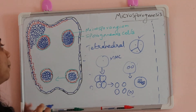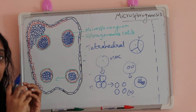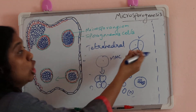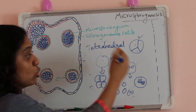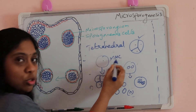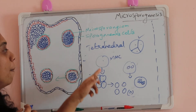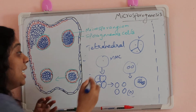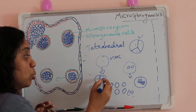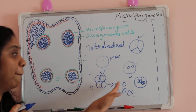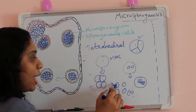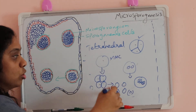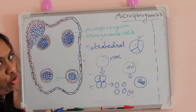So, firstly the sporogenous cells are tightly packed, then when the anther matures they get loosely arranged. Next, these loosely arranged microspore mother cells undergo meiotic division and form a tetrad for some time. After that, the tetrad splits into four haploid daughter cells — the microspores. The formation of these microspores is known as microsporogenesis.